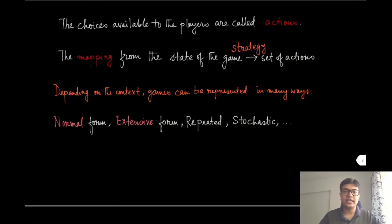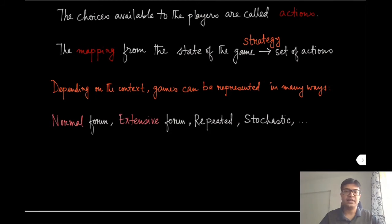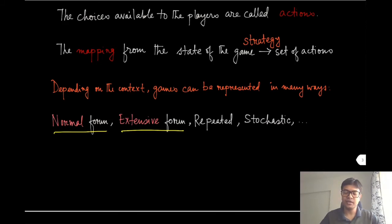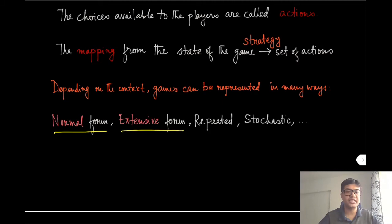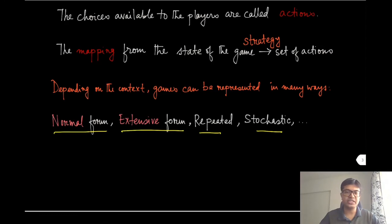Depending on the context, games can be represented in many ways. The two most common representations are the normal form and extensive form. Normal form games are typically used for games that end in one round — all players choose their actions and the game ends right after. Extensive form games are sequential: one player makes a move, then the second player makes a move, and so on — like chess, which is more succinctly represented as an extensive form game. There are also repeated games, stochastic games, and other forms, which we will not be discussing in this course.